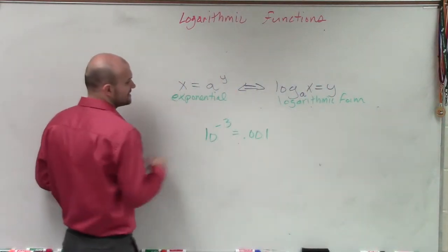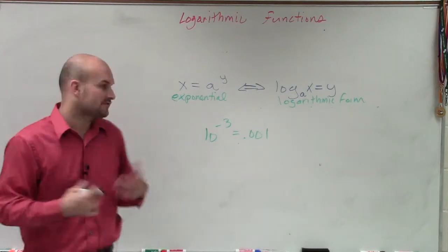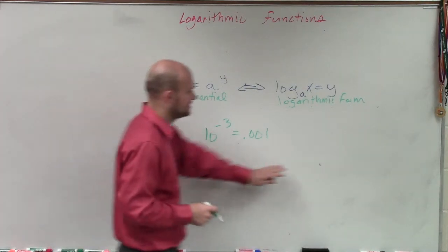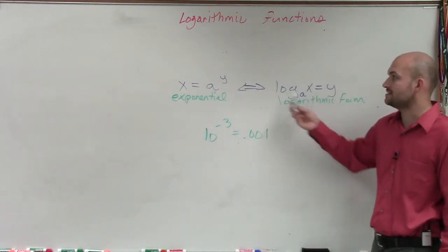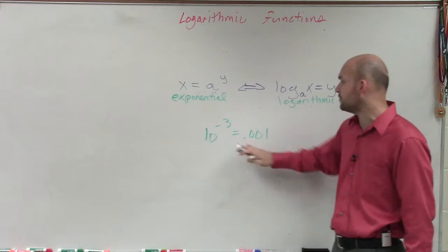So if I have 10 to the negative third equals 0.001, to convert this to logarithmic, a lot of times what I like to do is just look at, remember, a is your base. Here is your base for your exponent. So to convert,